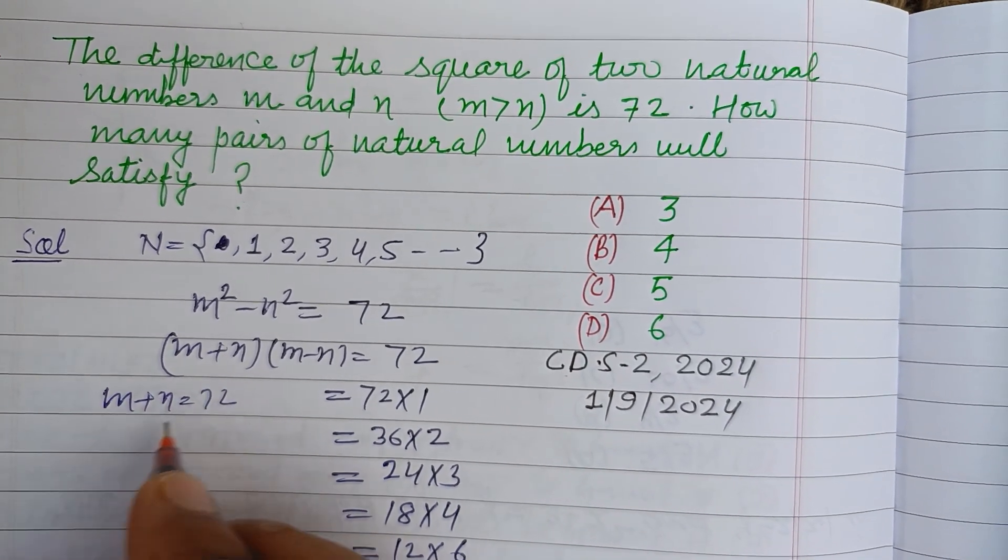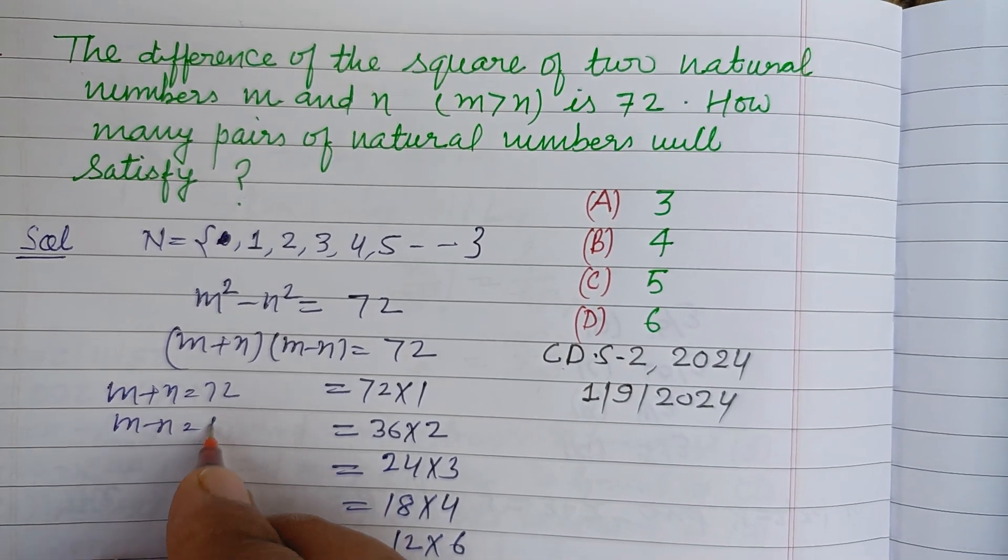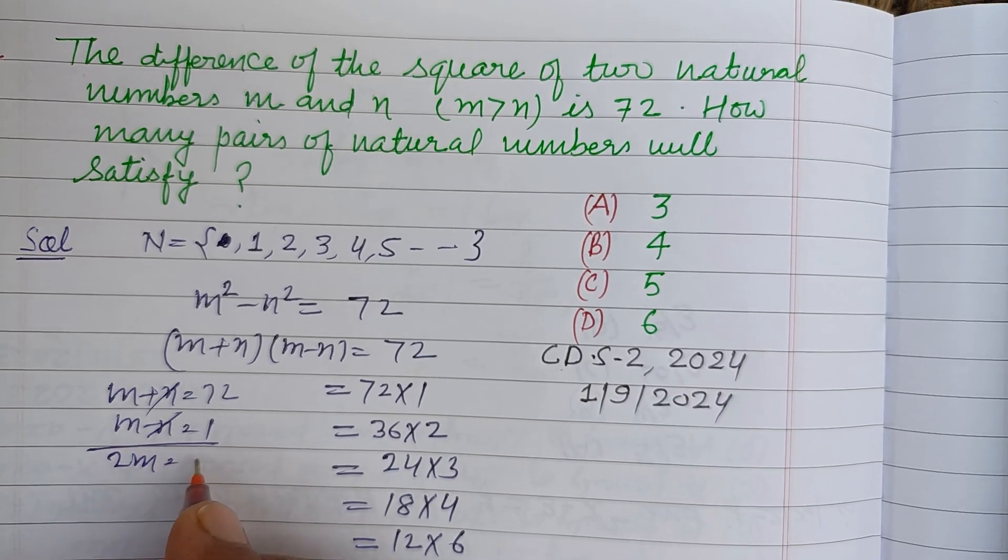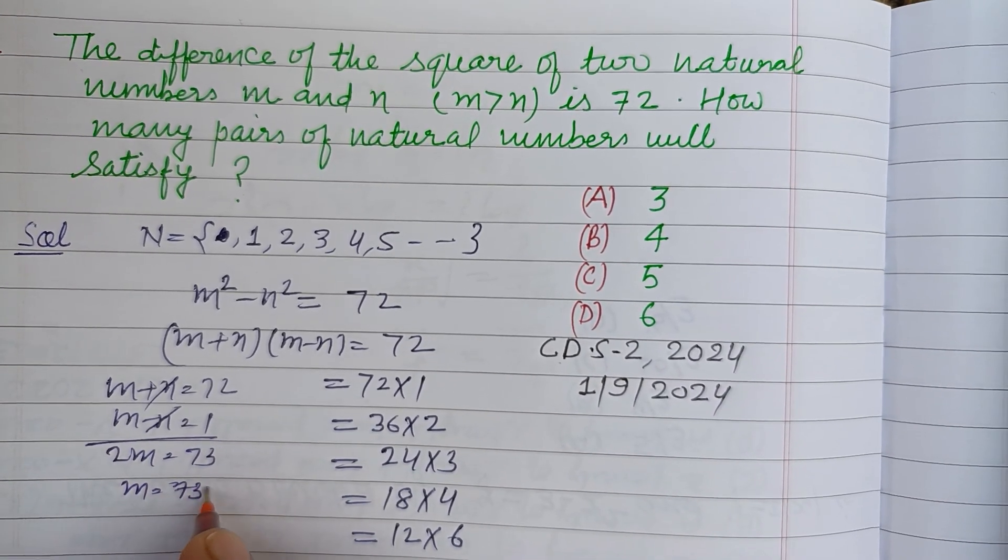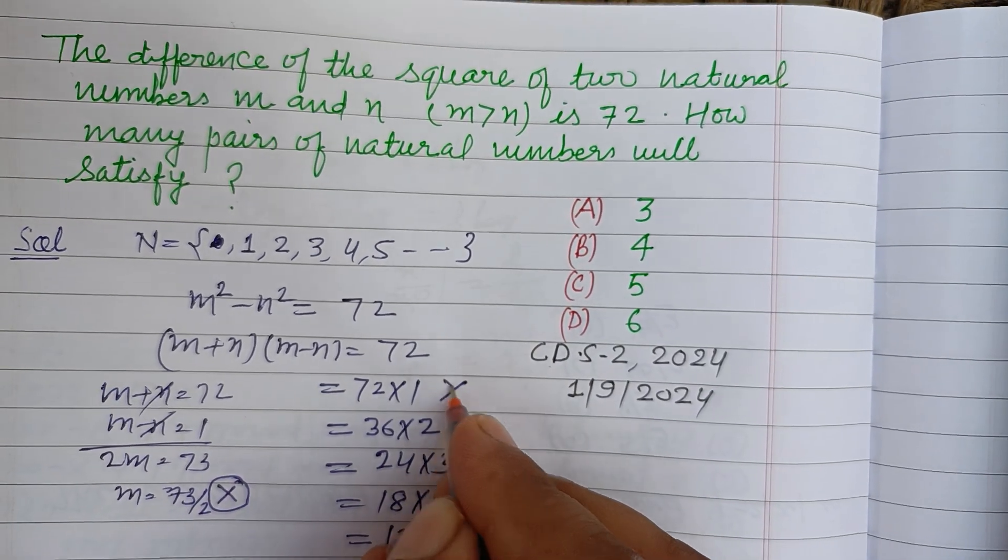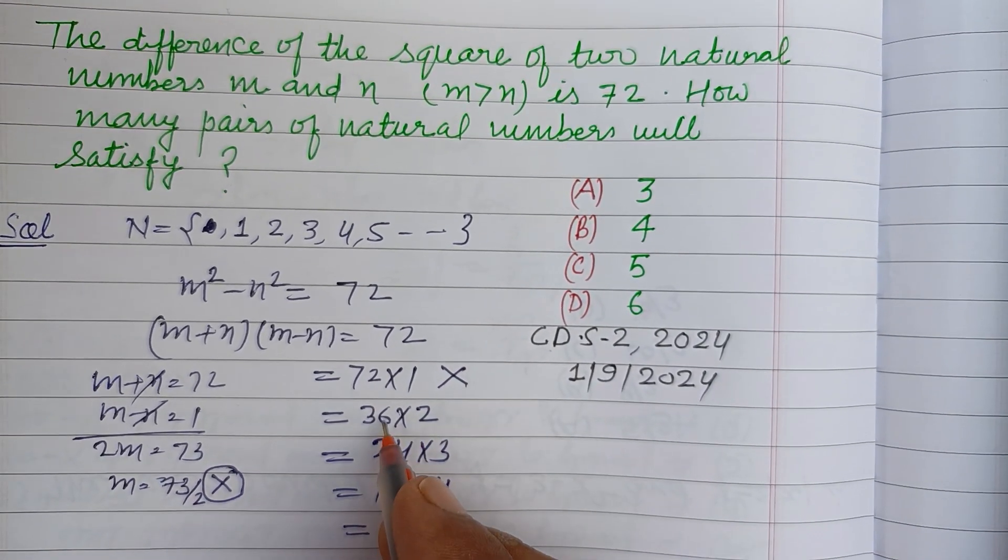What if we take it as m plus n equal to 72 and m minus n equal to 1? Then on adding, 2m equal to 73, m equal to 73 by 2, which is not a natural number. So this pair is not included. If the sum of these two pairs is even, then the answer will be an integer.